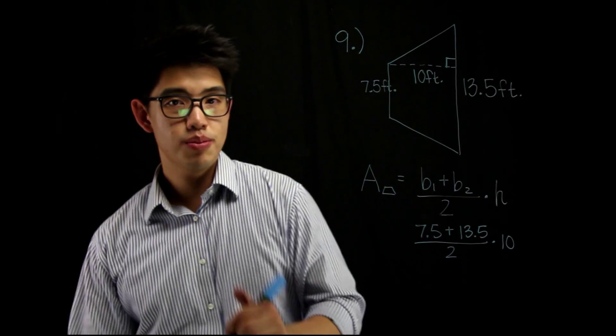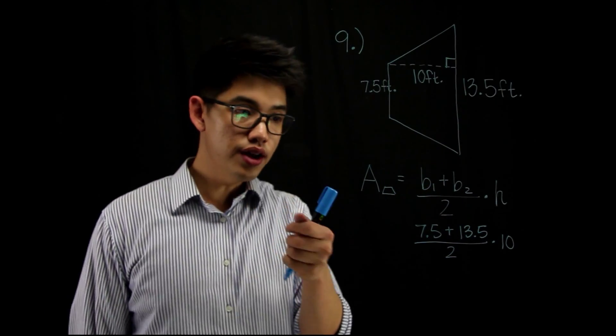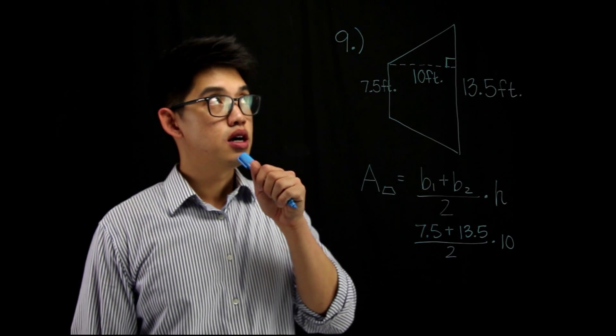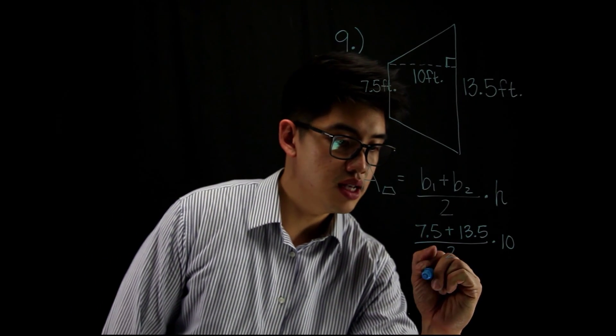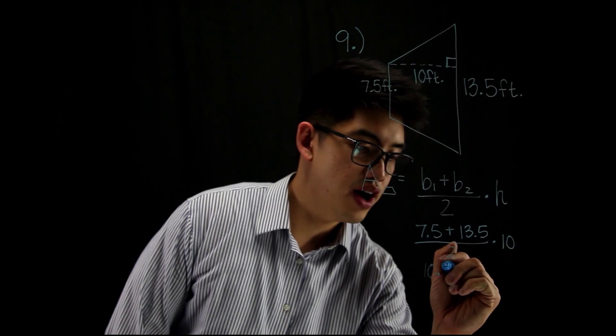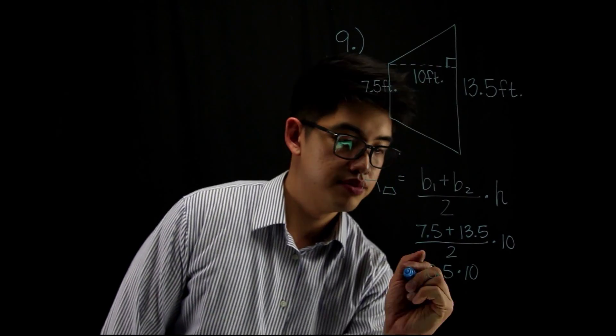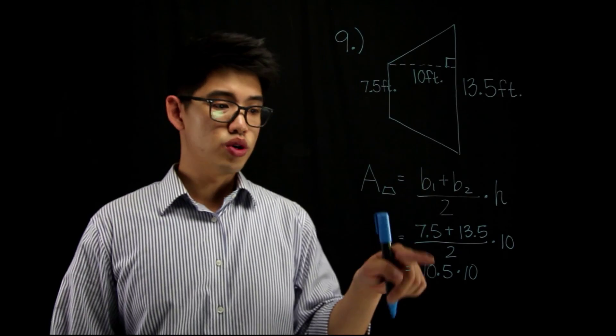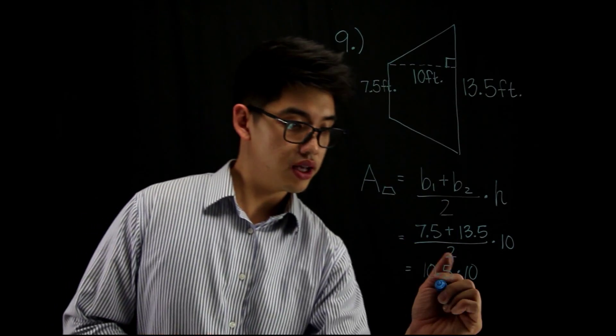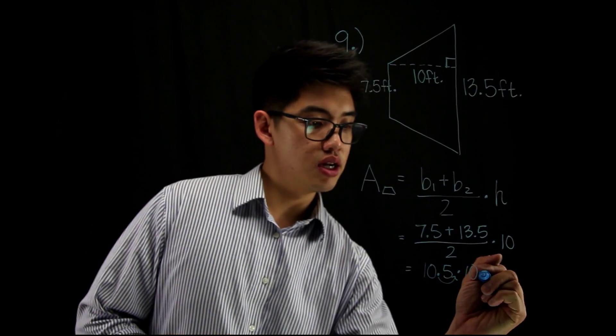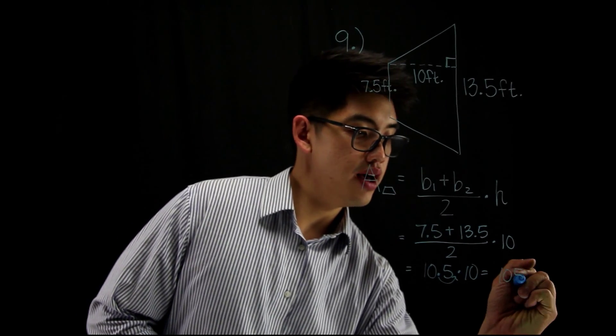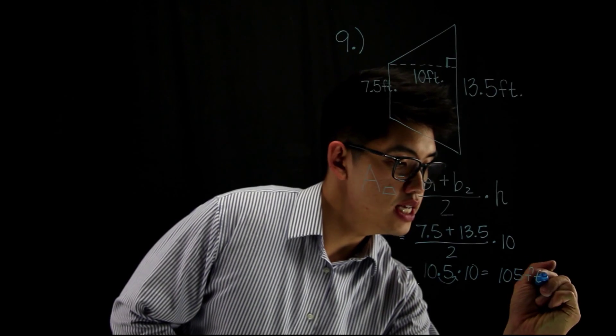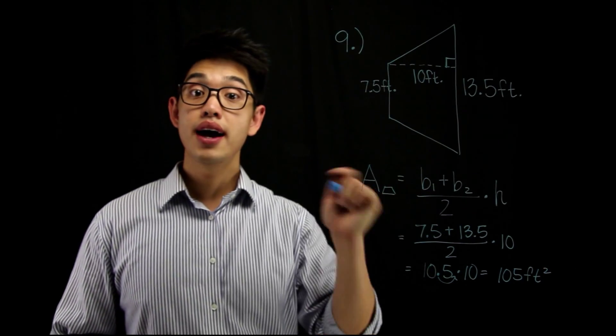7.5 plus 13.5, that's gonna be 21. And then 21 divided by 2, that's going to be 10.5. So, 10.5 times 10. Whenever we multiply any number by 10, we can just move the decimal point to the right one time. So my answer is gonna be 105. And since the units here are feet, we're gonna write 105 feet squared, and that is your answer.